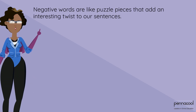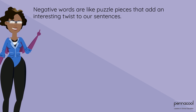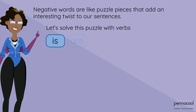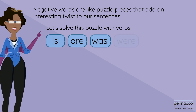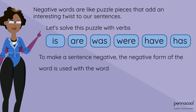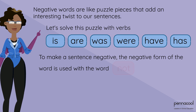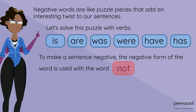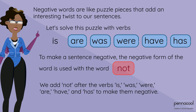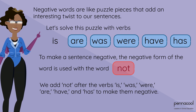Negative words are like puzzle pieces that add an interesting twist to our sentences. Let's solve this puzzle with verbs is, are, was, were, have, and has. To make a sentence negative, the negative form of the word is used with the word 'not'. We add 'not' after the verbs is, was, were, are, have, and has to make them negative.